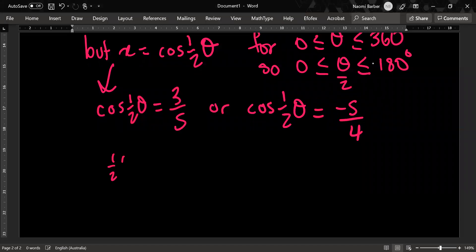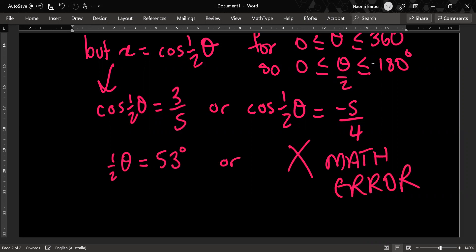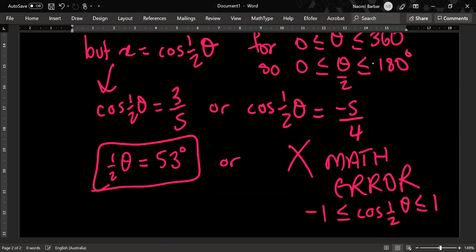So I have half theta equals 53 degrees to the nearest degree or math error. Now, because the range of cos is between minus 1 and 1, we cannot have that. So if I've got this solution, I then need to check whether it falls within my modified domain, which it does. That's fine. And then I need to times by 2. So theta equals 106 degrees.